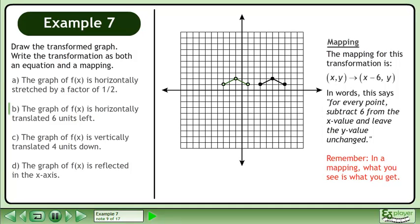The mapping for this transformation is shown. In words, this says, for every point, subtract 6 from the x value and leave the y value unchanged. Remember, in a mapping, what you see is what you get.